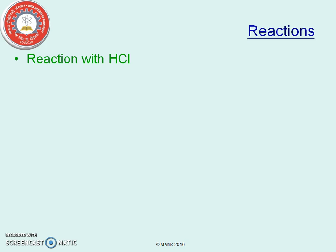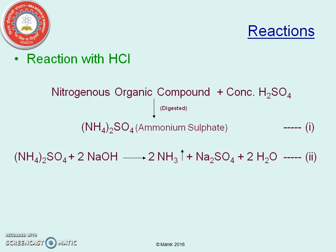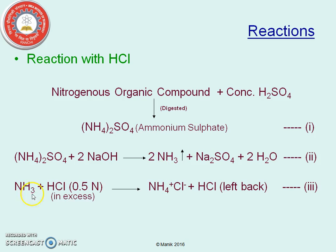Let us discuss the reactions once more on a single page. First reaction: nitrogenous organic compound is treated with concentrated H₂SO₄ and we get ammonium sulfate. Then this ammonium sulfate is reacted with sodium hydroxide solution to release ammonia. In this step the ammonia is released, and this ammonia is then trapped in HCl, which is taken in excess, and we are going to get ammonium chloride, and HCl will be left back.